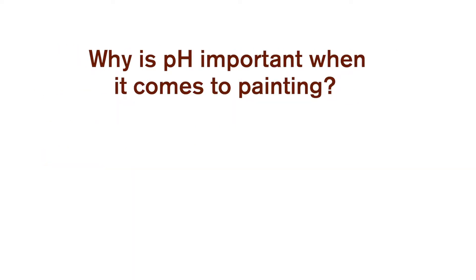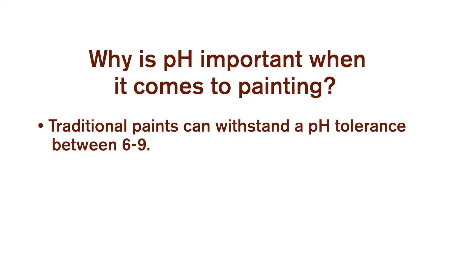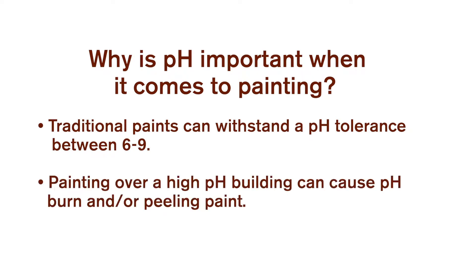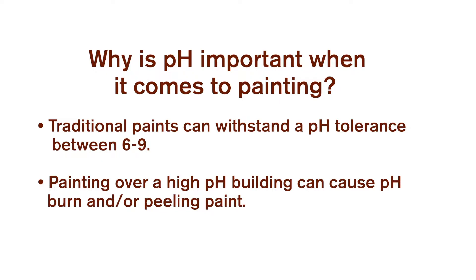Why is pH important when it comes to painting? Traditional paints can withstand a pH tolerance between 6 and 9. Painting over a high pH building can cause pH burn and/or peeling paint.